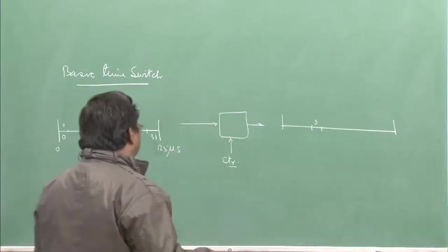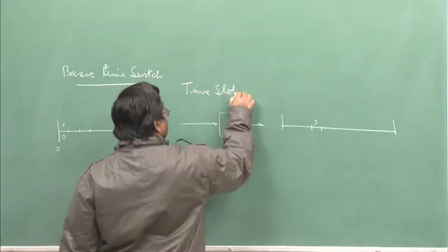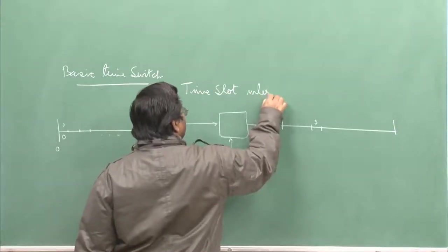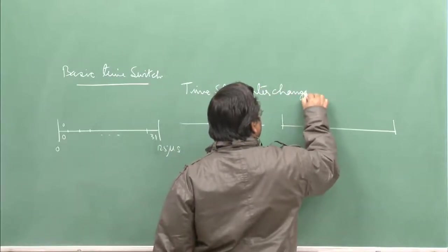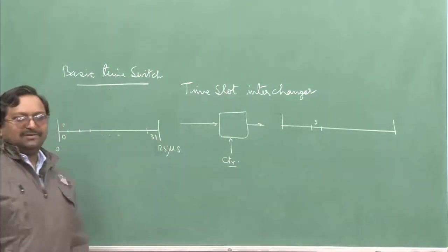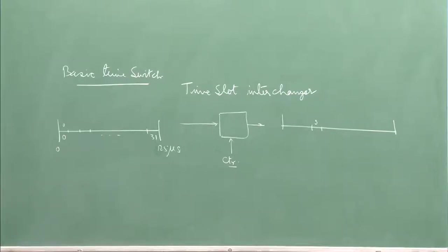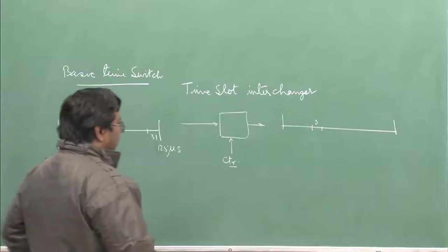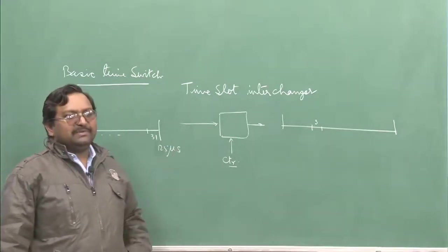This kind of switch is also known as a time slot interchanger. Something similar can also be done in the optical domain for implementing all-optical circuit switching — the optical time slot interchanger, done using fiber loop delay lines. Here, I will be using simply random access memory.